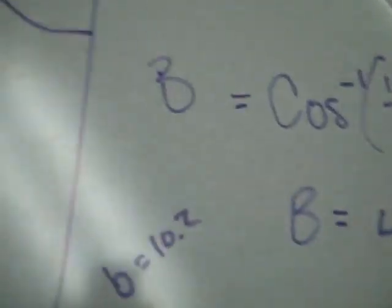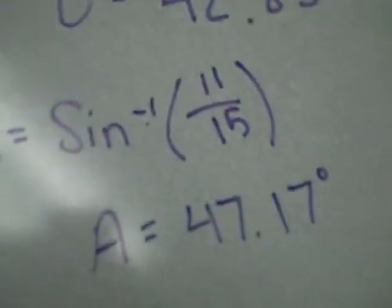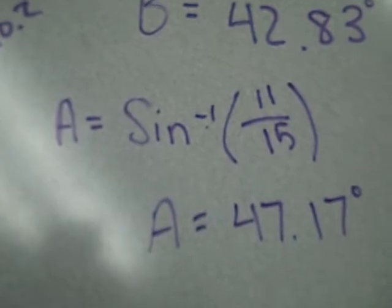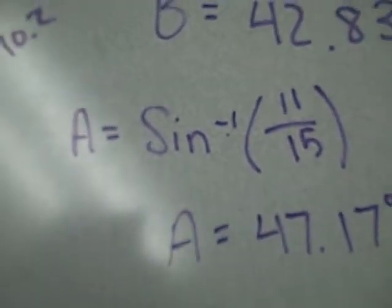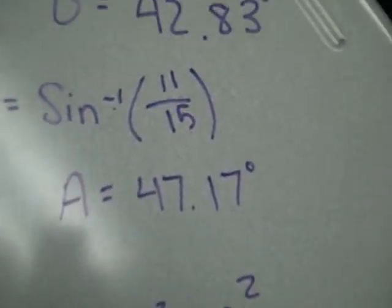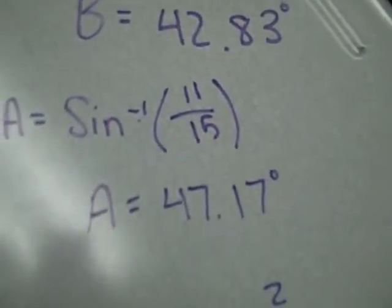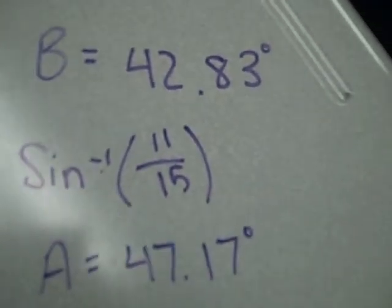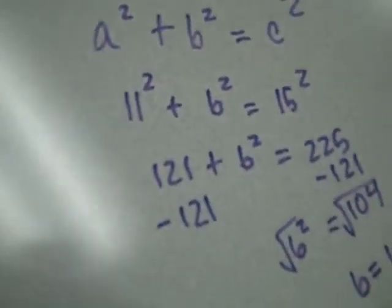Then we used the inverse sine, which is 11 over 15, the opposite over hypotenuse, to give us 47.17 degrees. Those three angles equal 180 degrees to make our triangle.